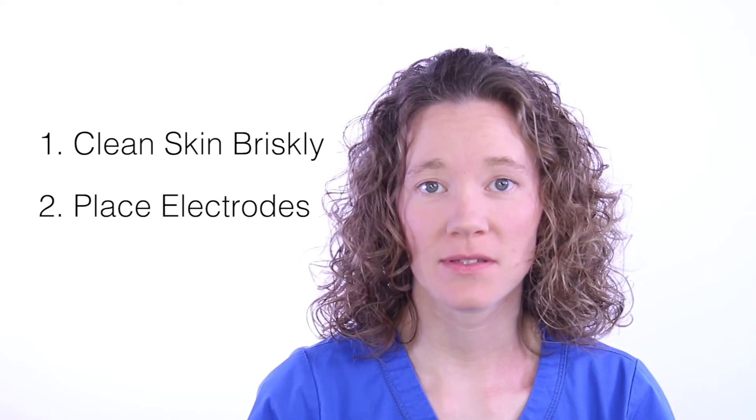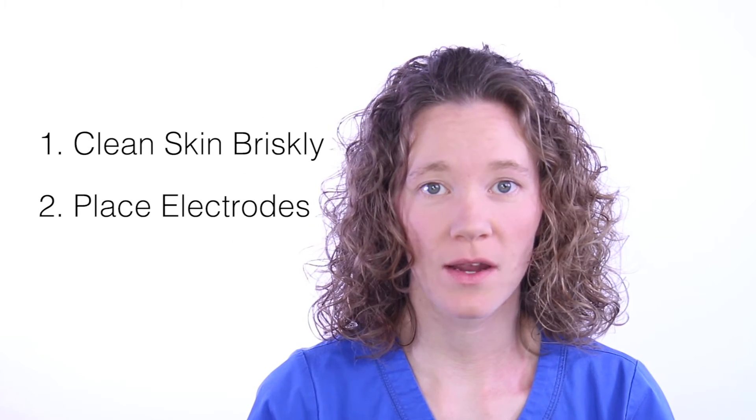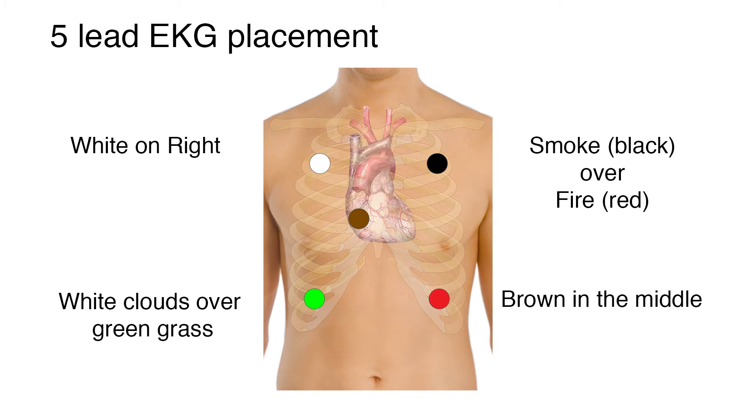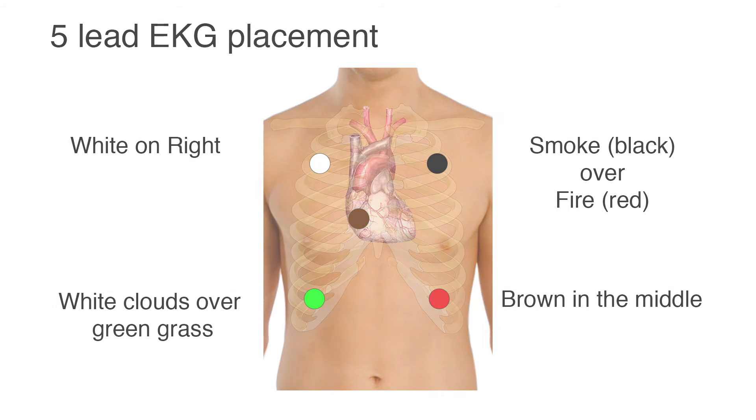When placing EKG leads on a patient, proper skin preparation and lead placement is essential for a clear EKG reading. Start by cleaning the skin briskly with an alcohol rub and allow to dry. Place the electrodes in their proper location and press firmly. For placement, remember white on right with white clouds over green grass. On the left, smoke over fire — black over red — with brown in the middle.